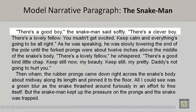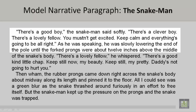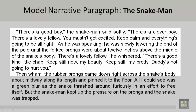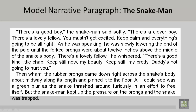"There's a good boy," the Snake Man said softly. "There's a clever boy. There's a lovely fellow. You mustn't get excited. Keep calm and everything's going to be all right." As he was speaking, he was slowly lowering the end of the pole until the fork prongs were about twelve inches above the middle of the snake's body. "There's a lovely fellow," he whispered. "There's a good, kind little chap. Keep still now, my beauty. Keep still, my pretty. Daddy's not going to hurt you." Then wham! The rubber prongs came down right across the snake's body, about midway along its length, and pinned it to the floor. All I could see was a green blur as the snake thrashed around furiously in an effort to free itself. But the Snake Man kept up the pressure on the prongs, and the snake was trapped.